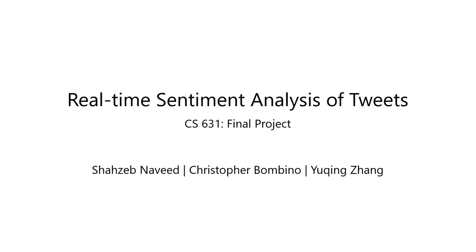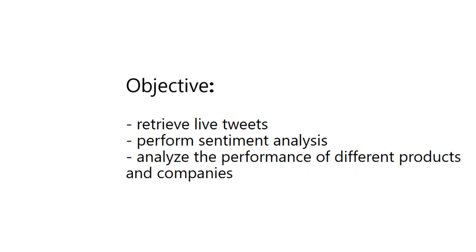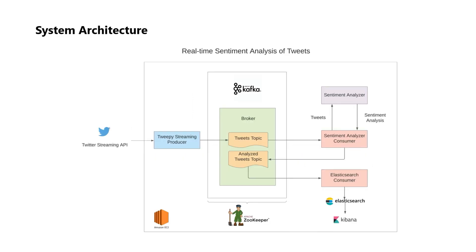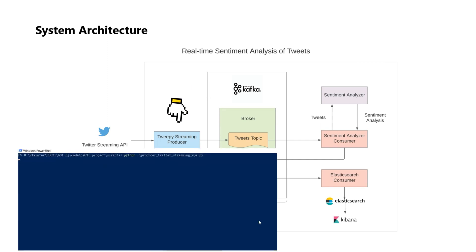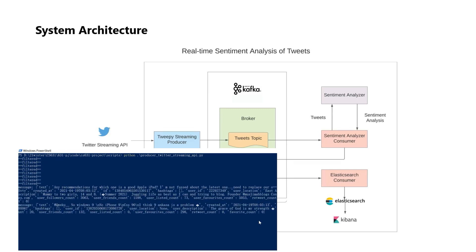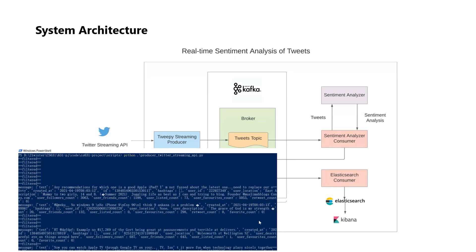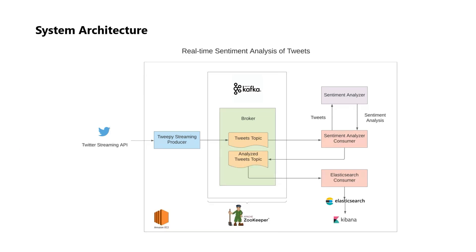The idea of the project is to retrieve live tweets in a real-time fashion and to perform sentiment analysis to determine consumer sentiments about different companies and their products. To achieve that, we came up with an architecture that revolves around Apache Kafka. We write a tweet-by-streaming producer and retrieve live tweets from the Twitter Streaming API, writing those results onto a tweets topic in the Kafka cluster.